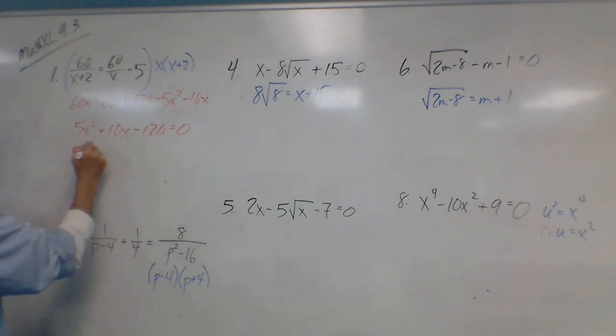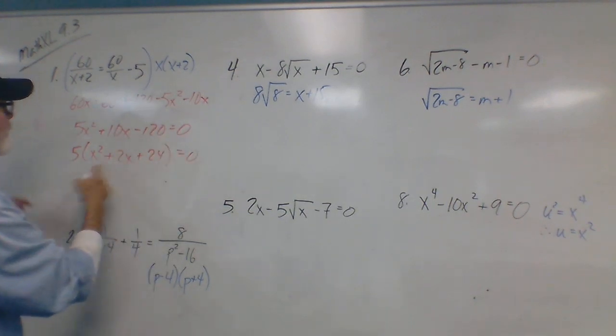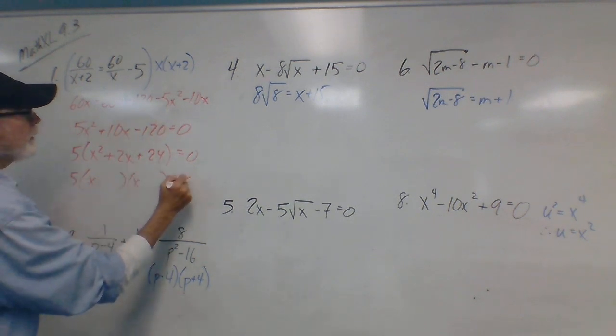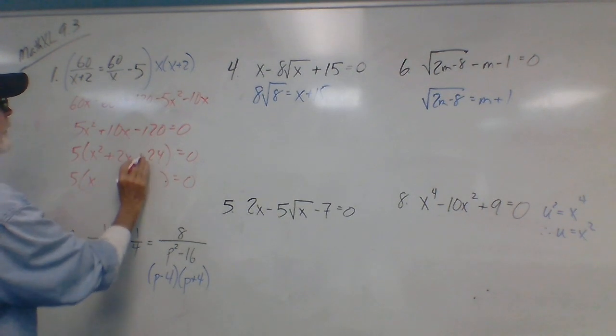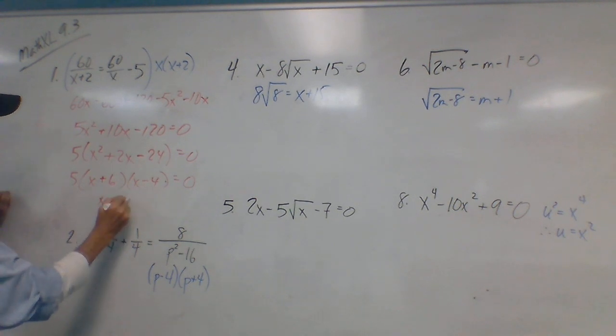So when I do that, 5x squared minus 10x minus 120 equals 0, assuming that I did my multiplication right. When I move everything over to one side, there's what I'm going to have. There's a GCF, there's 5, I'm going to factor it out, and that leaves me with the following. 5 times x squared minus 2x minus 24 equals 0. So this thing will factor. When it factors, x plus 2, no wait, plus 6 minus 4. Oh, this is minus, there we go. Plus 6 minus 4.